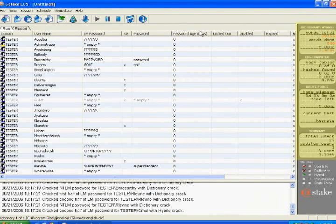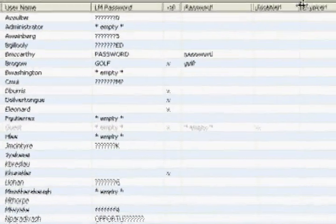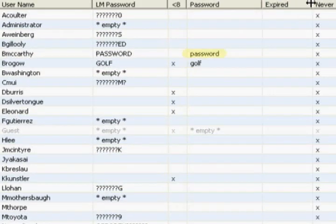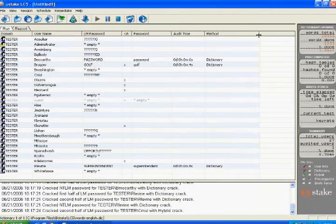In this right column, you can glimpse how fast loft crack is working. It has already cracked three weak passwords: golf, password, and superintendent. No matter how long the word is, if it's straight from the dictionary, loft crack is going to get it. Let's jump ahead.